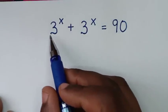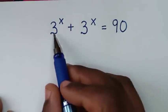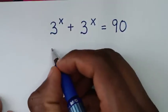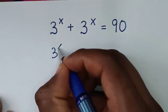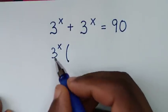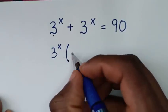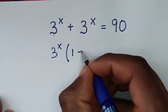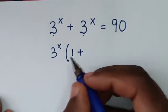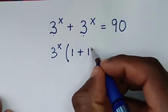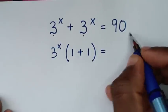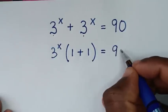In the first step, from the left side, 3 power of x is common. So we will take 3 power of x out of the bracket. Then 3 power of x divided by 3 power of x is 1, plus 3 power of x divided by 3 power of x is 1, and the bracket is equal to 90.